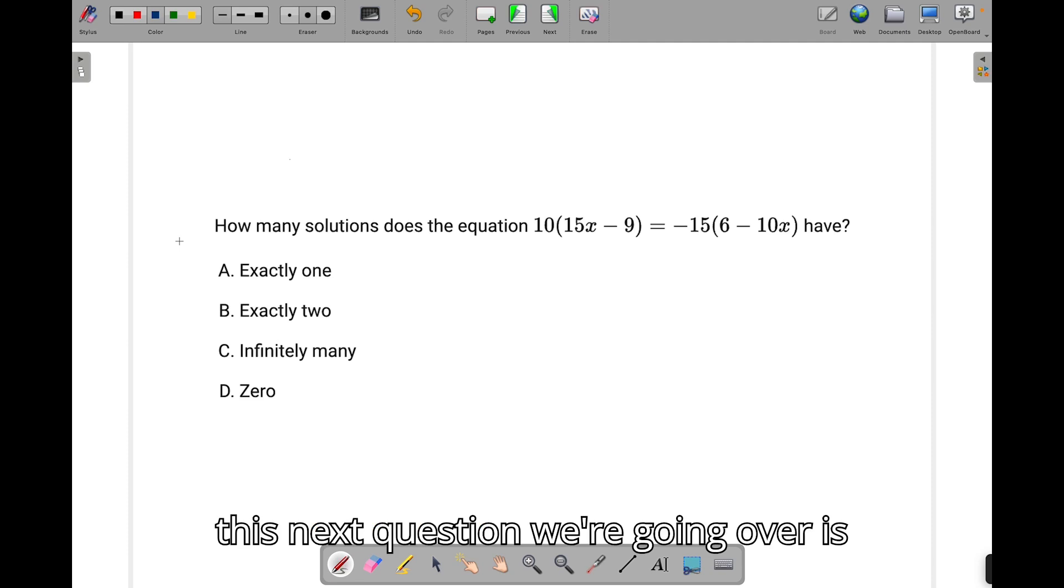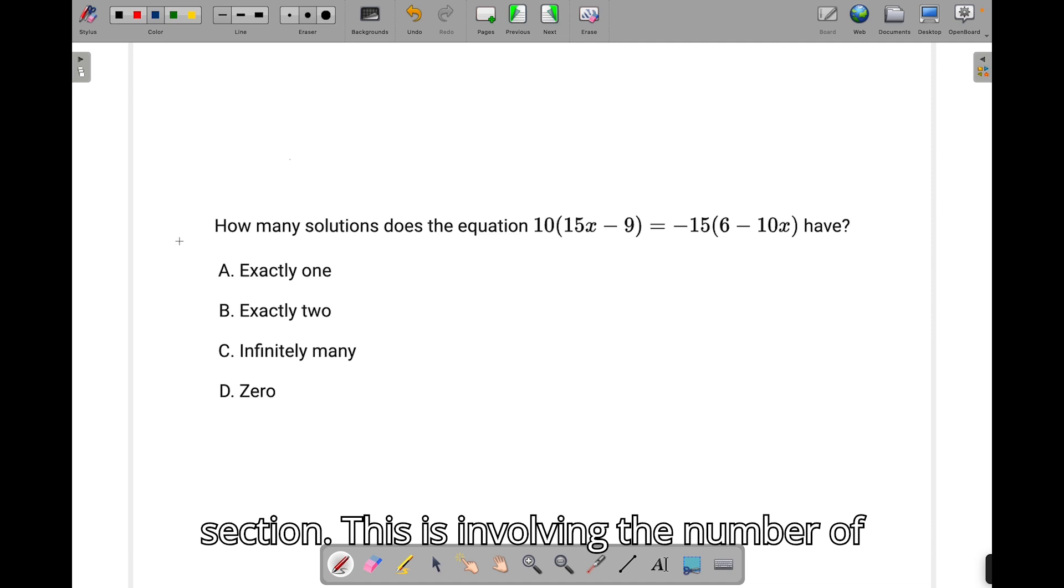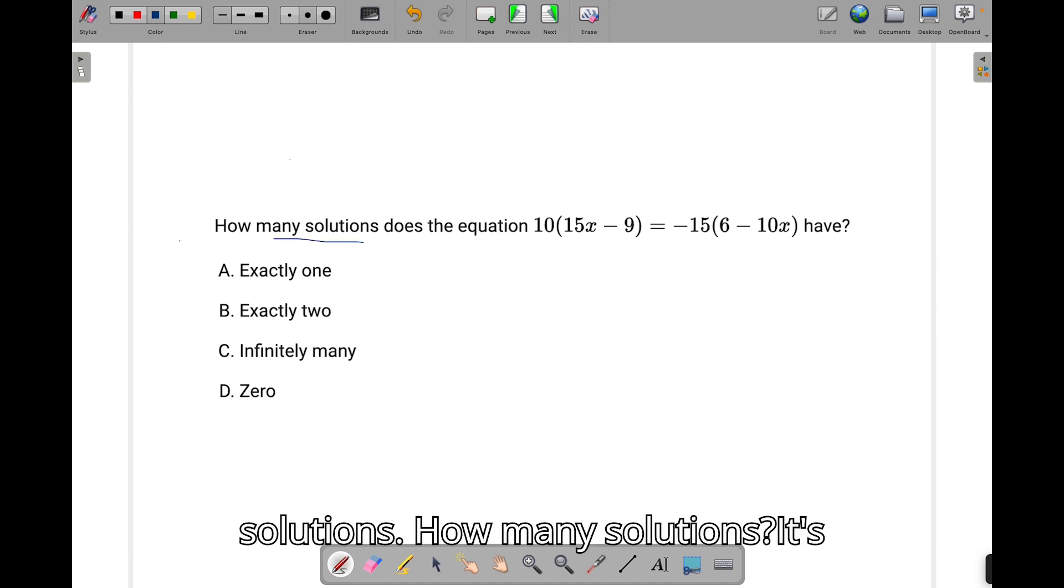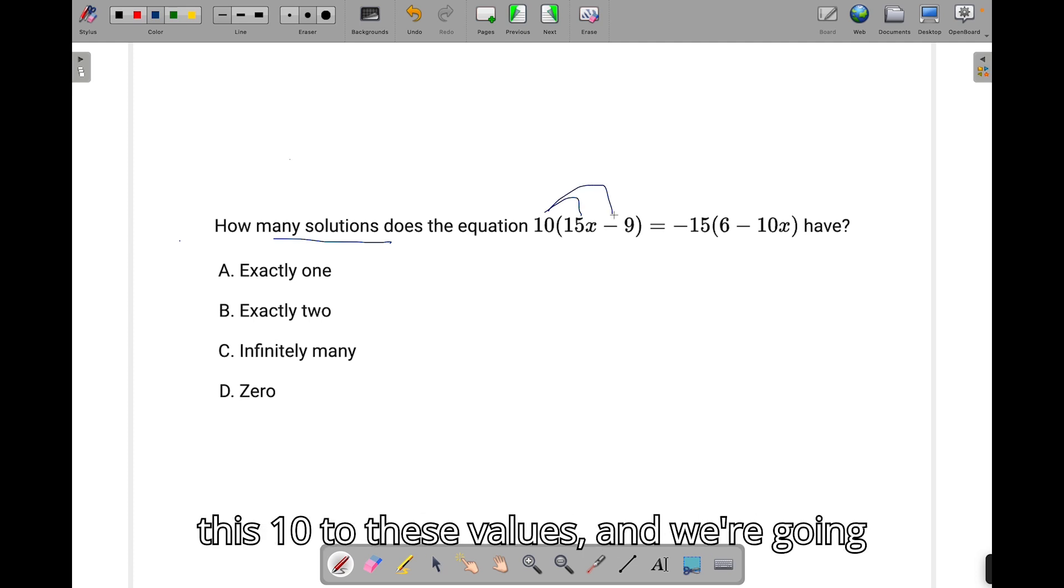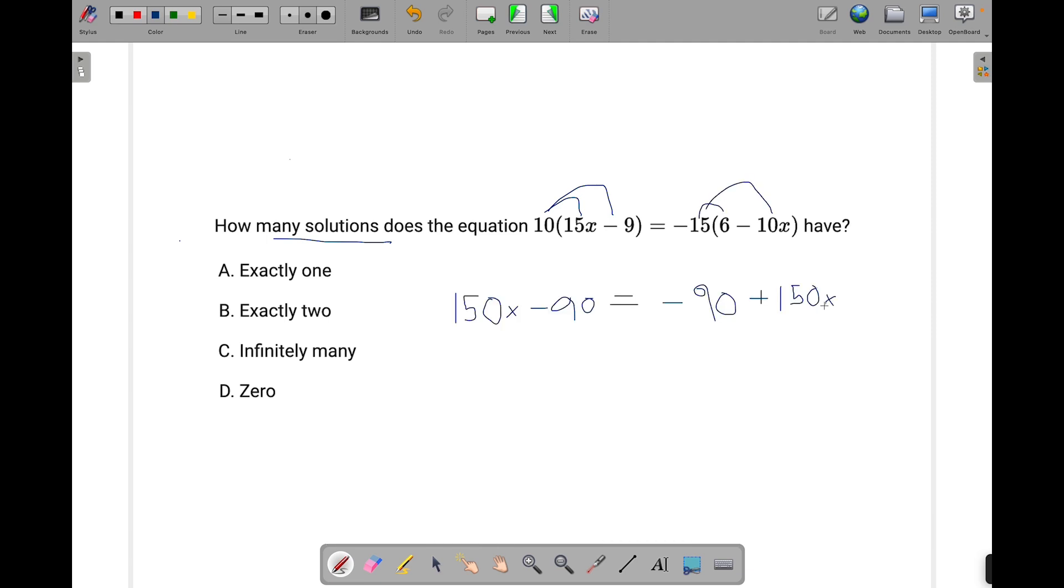This next question we're going over is now moving on to our short question section. This is involving the number of solutions. How many solutions? It's usually 1, 2, infinite, or 0, like these answer choices say. Okay, this is not involving a constant, so what we're going to do here is first just distribute everything. We're going to distribute this 10 to these values, and we're going to distribute this negative 15 to these values.